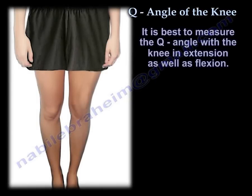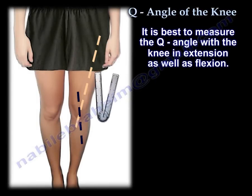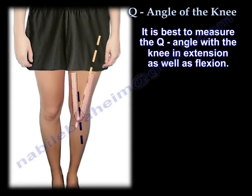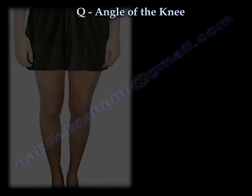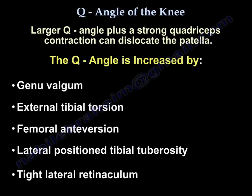It is best to measure the Q-Angle with the knee in extension as well as flexion. A larger Q-Angle plus a strong quadriceps contraction can dislocate the patella. Q-Angle is increased by genu valgum, external tibial torsion, femoral anteversion, lateral position of the tibial tuberosity, and tight lateral retinaculum.